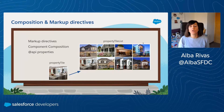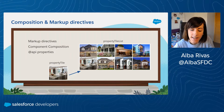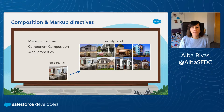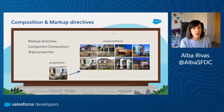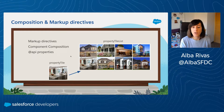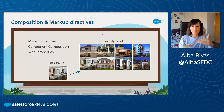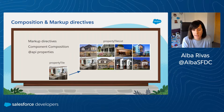Now we are going to look at composition. A good example is the property tile list component — we have our property tile list and we use the auxiliary property tile component to represent every individual house. We are going to iterate over the houses returned by the backend and compose the page with this auxiliary component. Let's look at the code of these two components.